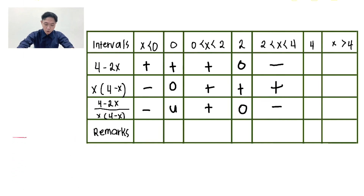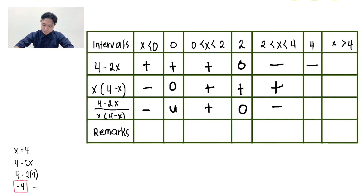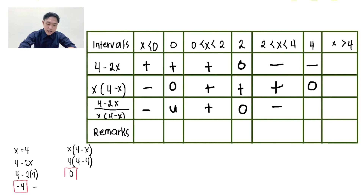Proceeding to positive 4 — no interval, so we automatically use positive 4. Evaluate 4 minus 2x: 4 minus 2 times 4. The answer is negative 4, sign is negative. For x times the quantity of 4 minus x: 4 times 4 minus 4. The answer is 0. Negative divided by 0 is undefined.